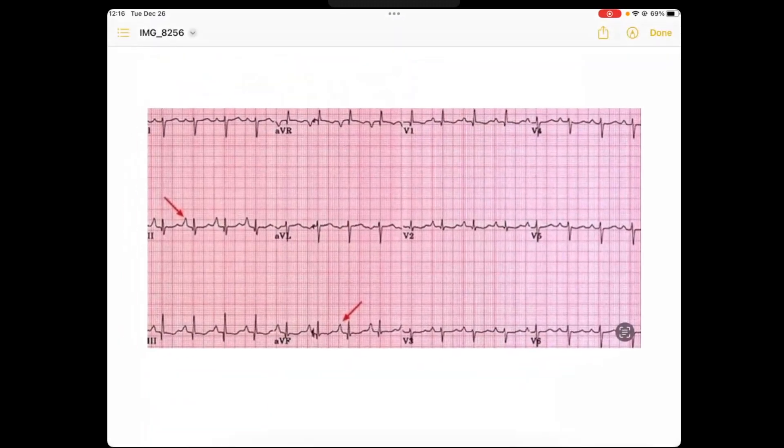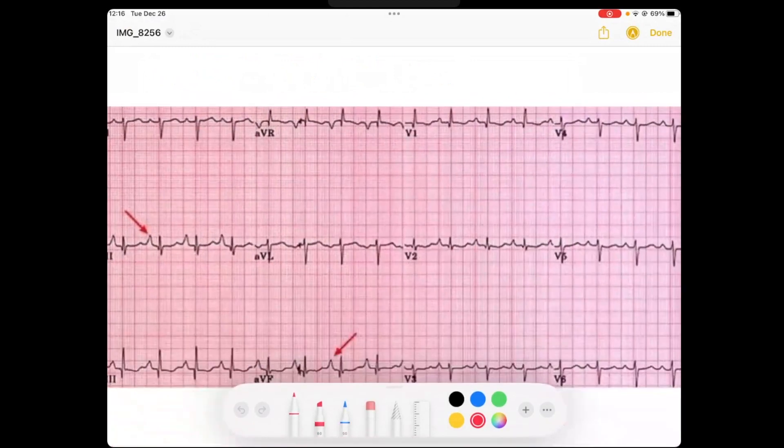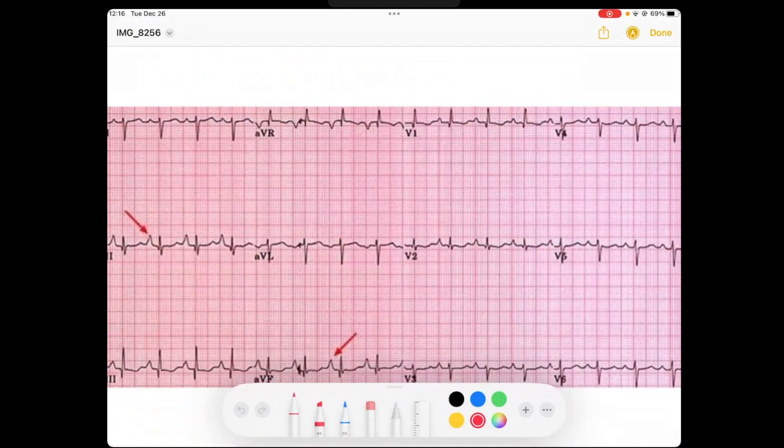So here we've got our EKG. And remember, we're looking for atrial enlargement. So we're going to look at the P's. What could be some causes for right atrial enlargement? We would think maybe right ventricular hypertrophy from lung disease. So sometimes when you see if you know that maybe you see some evidence of right ventricular hypertrophy, then maybe they've got right atrial enlargement.